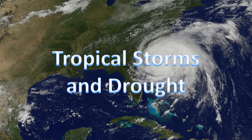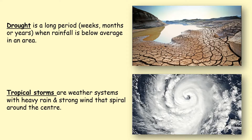This session is on the causes, consequences, distribution and frequency of tropical storms and drought. Tropical storms are weather systems with heavy rain and strong wind that spiral around the central eye of the storm. Drought is when we have a long period of time when we have rainfall below average in an area.